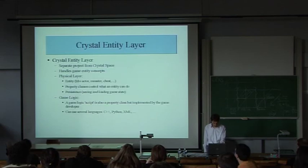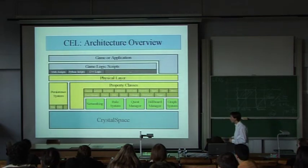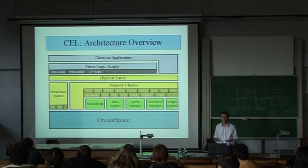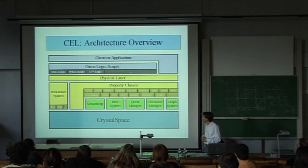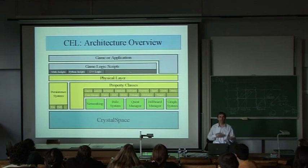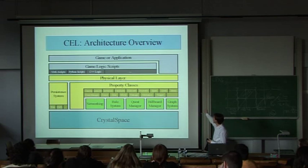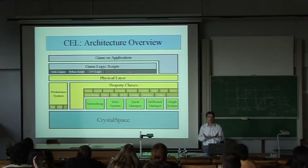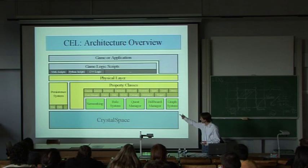Then Crystal Entity Layer sits on top of Crystal Space and adds the notion of game entities and game concepts. An entity is a typical object in a game world — it can have a visual representation, or it can just handle game logic without being visual. You can attach functionality through property classes. For example, an entity representing the player will typically have a camera attached via the camera property class.